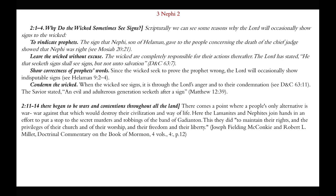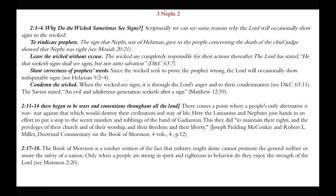Chapter 2, verses 11-14: there began to be wars and contentions throughout all the land. There comes a point when a people's only alternative is war — war against that which would destroy their civilization and way of life. Here the Lamanites and Nephites join hands in an effort to put a stop to the secret murders and robbings of the band of Gadianton. This they did to maintain their rights and the privileges of the church and of their worship and their freedom and their liberty. The Book of Mormon is a somber witness of the fact that military might alone cannot promote the general welfare or assure the safety of a nation. Only when a people are strong in spirit and righteousness and behavior do they enjoy the strength of the Lord.